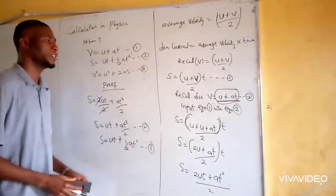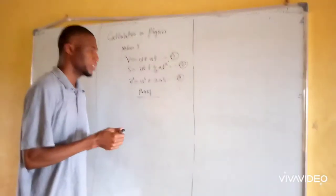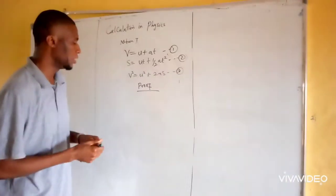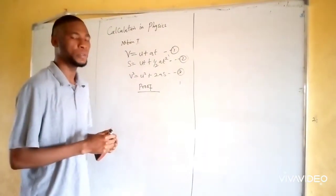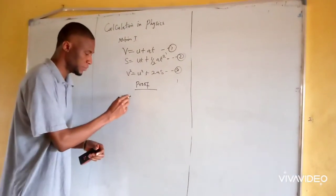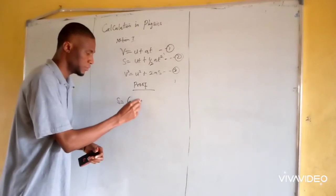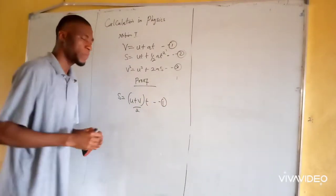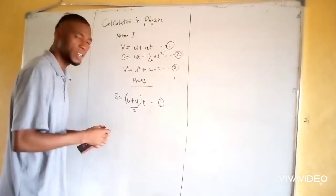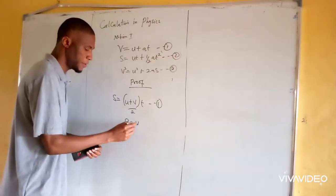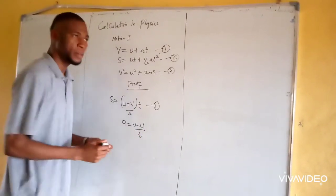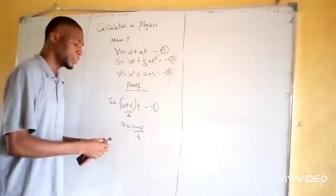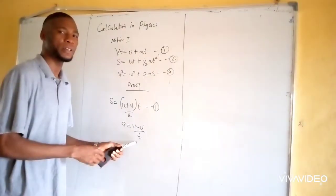We are going to prove equation three using the formula for distance covered. Let's say this is equation one. For the acceleration formula, we now make the time t the subject of the formula, and we cross multiply.